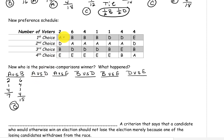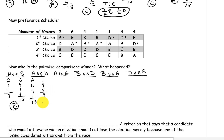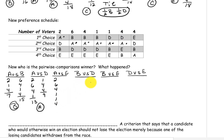For A versus D: A is above D on the two, on the six, on the four, and on this one. D is above A on the next one and on this four. And finally E is on top on the last four for the A versus E comparison. Candidate A has a total of 18 and E only has eight, so A wins this pairing.